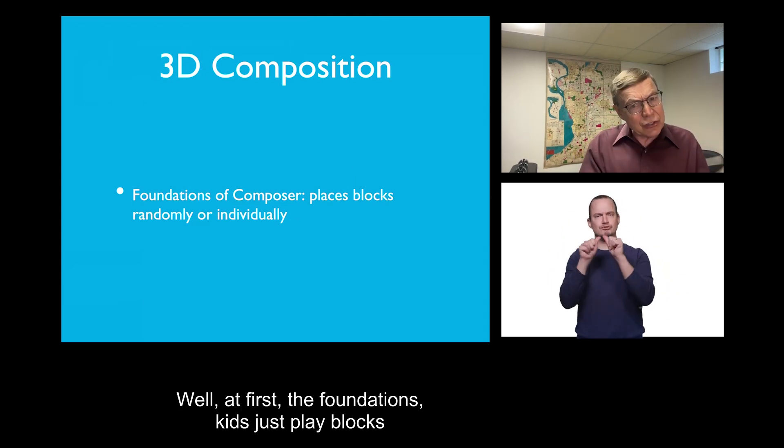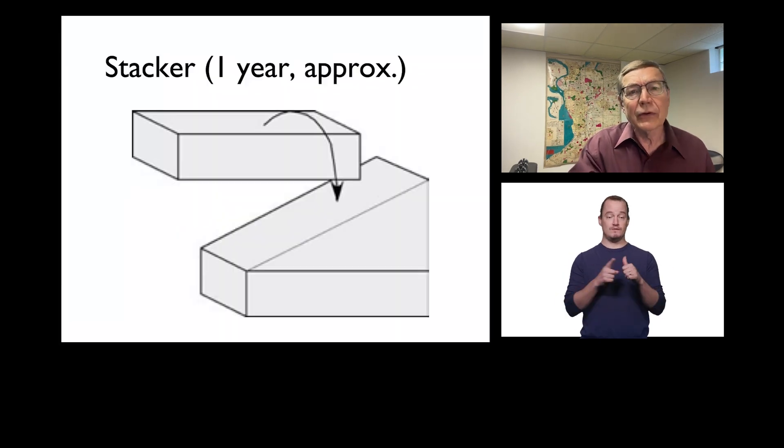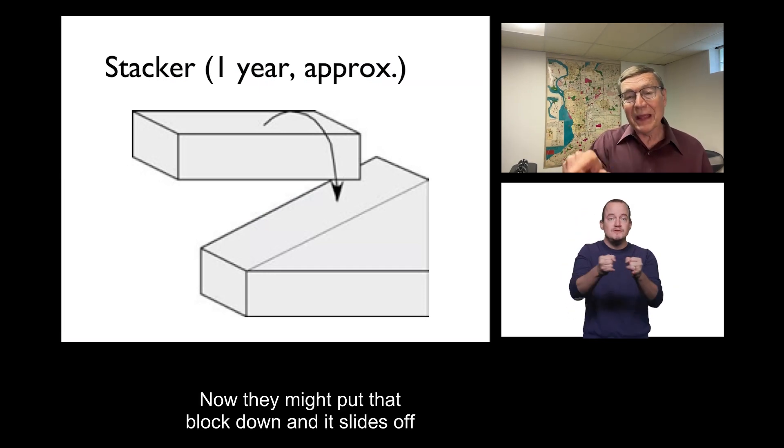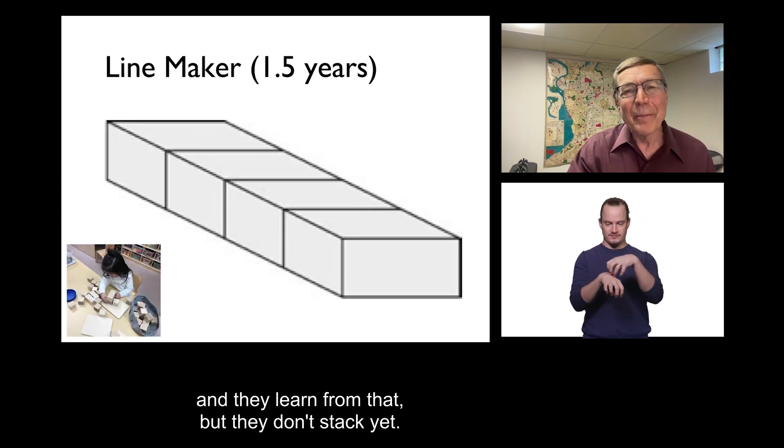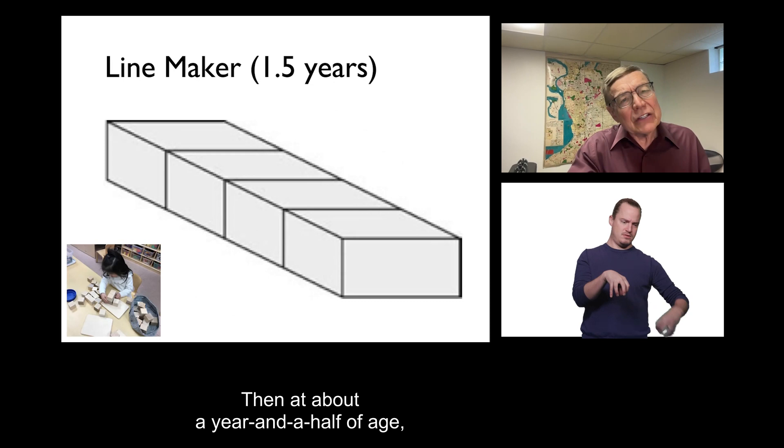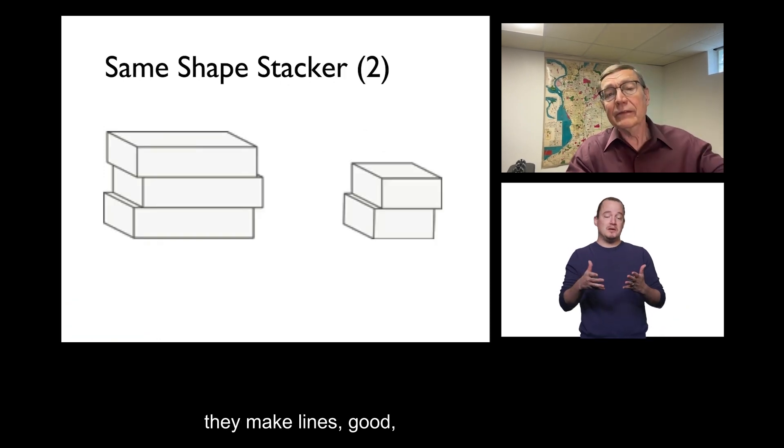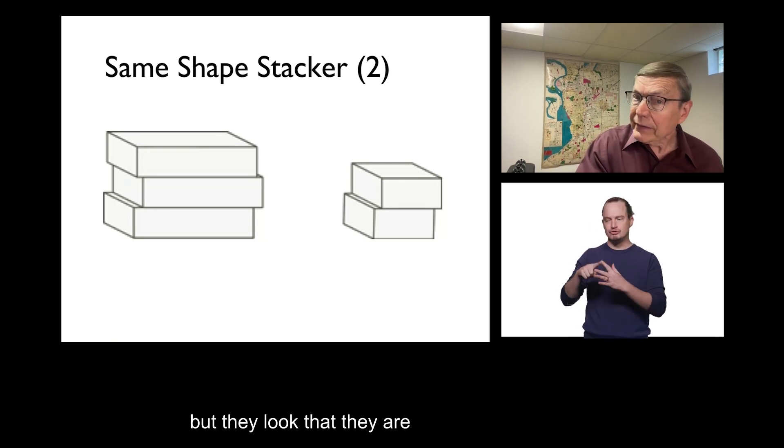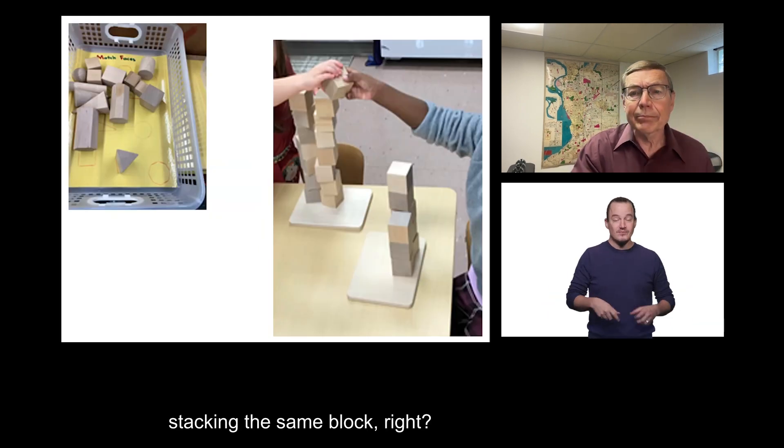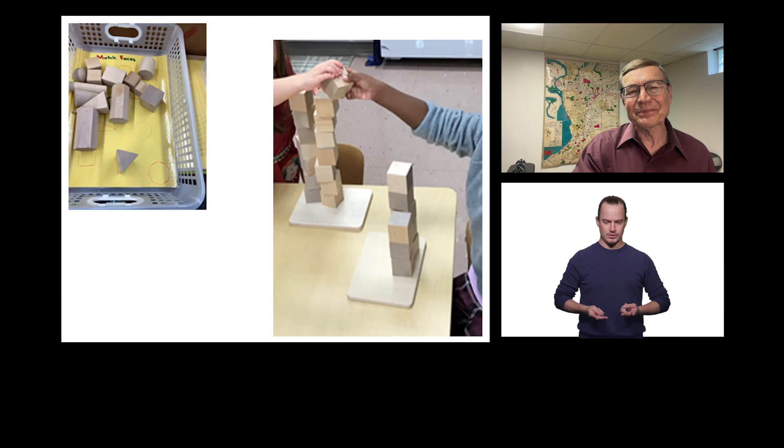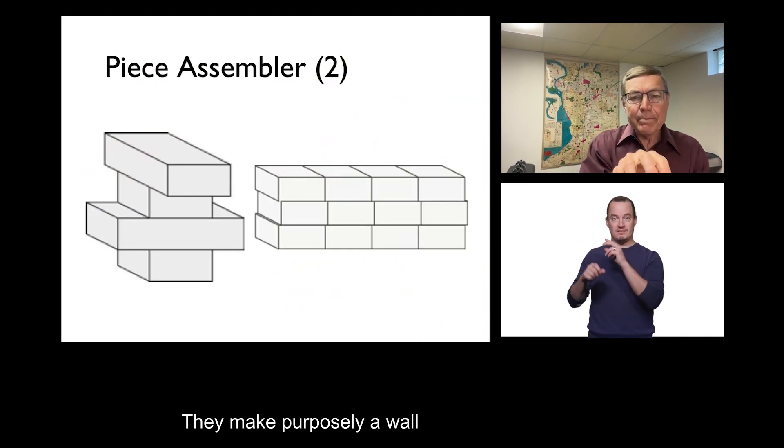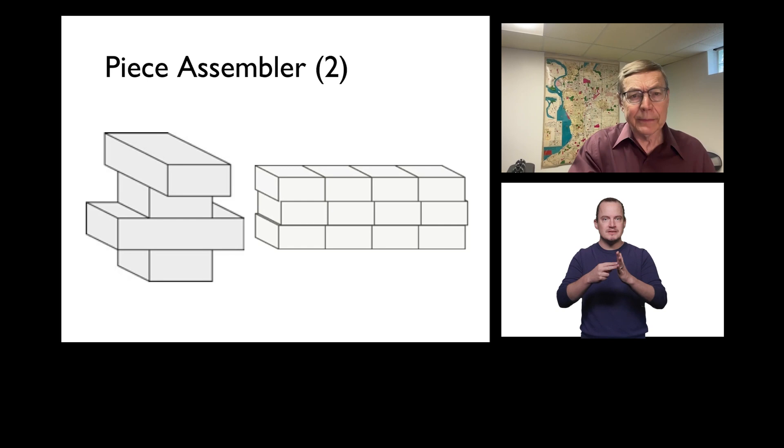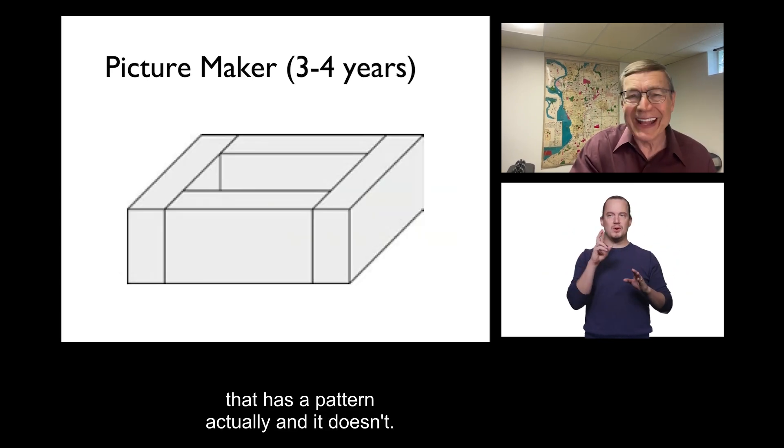Well, at first, the foundations, kids just play blocks randomly or individually. At about a year, they learn to stack. Now, they might put that block down and it slides off and they learn from that, but they don't stack yet. Then, at about a year and a half of age, they make lines, good. And then, soon thereafter, they stack, but they look that they are stacking the same block, like this. Then, they are piece assemblers. They make purposely a wall or a kind of tower there that has a pattern, actually, and it doesn't.